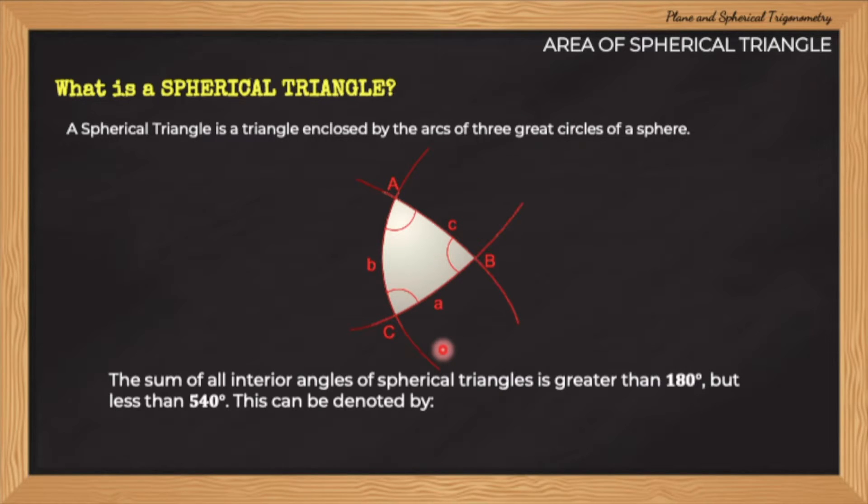The sum of all included or interior angles of a spherical triangle is greater than 180 degrees but less than 540 degrees. It means that A plus B plus C, which are the interior angles, the sum of these angles must be greater than 180 and must be less than or equal to 540 degrees.